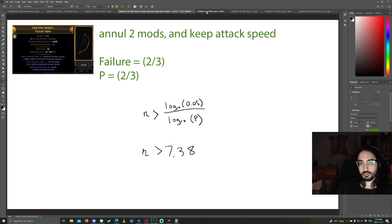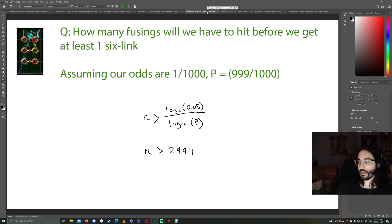Alright, let's go to the next scenario. This is a scenario that can be relatable to literally everybody who plays the game. Which is getting a 6 link with fusings. The question is, how many fusings will we have to hit before we get at least 1 six link? So we can assume the odds are about 1 in 1,000 for getting a 6 link. So we need to calculate P, which is the chance of failure. So that would be 999 times out of 1,000 we fail.